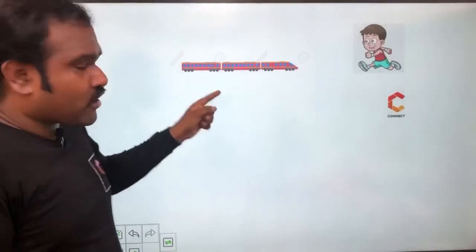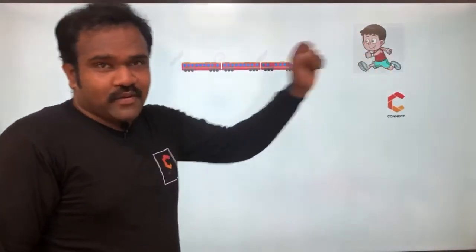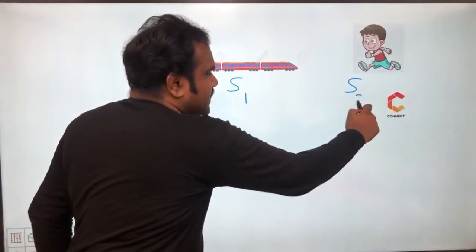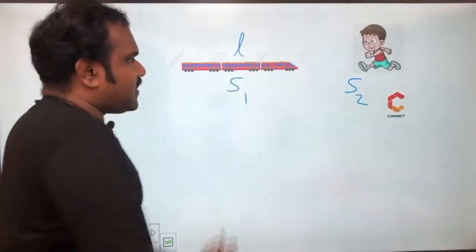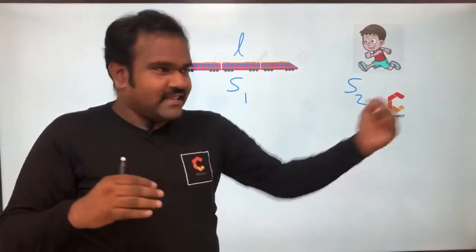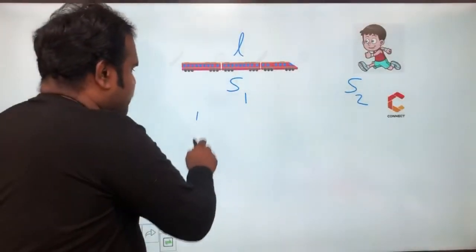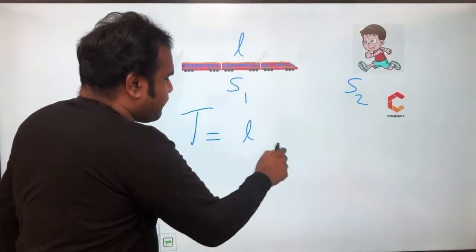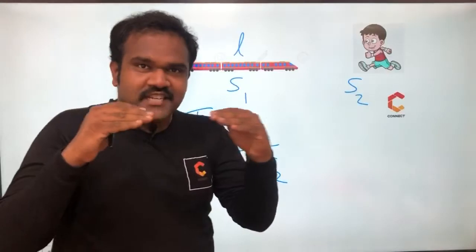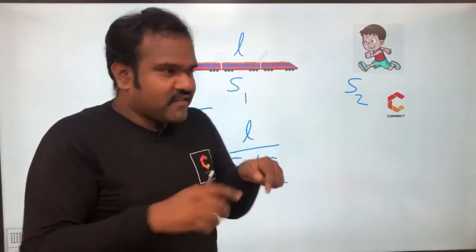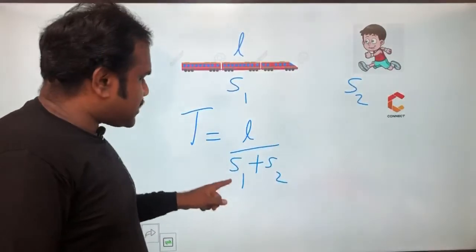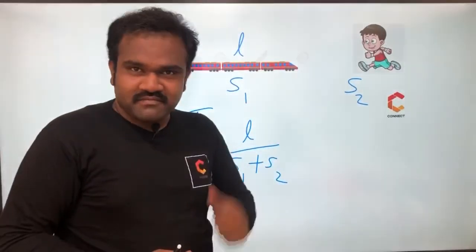Third case is a train crossing a moving object without length. So train's speed is S1, the boy's speed is S2, train's length is L. So the boy is coming in the opposite direction of the train in the railway track. So time taken to cross or meet each other is L by S1 plus S2. Why plus S2? Because opposite direction, so relative speed is plus. If the boy is riding a bicycle in the same direction of the train, it is S1 difference S2.